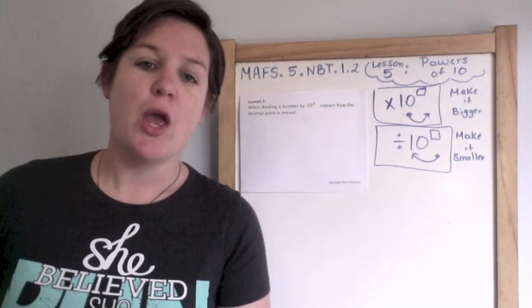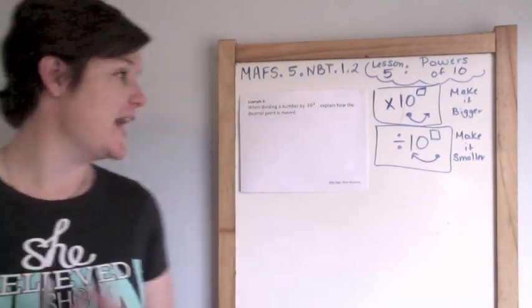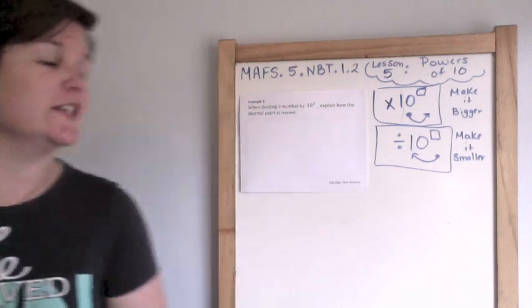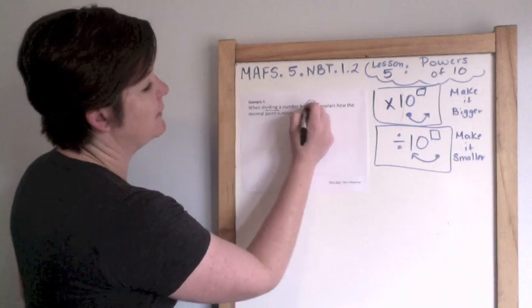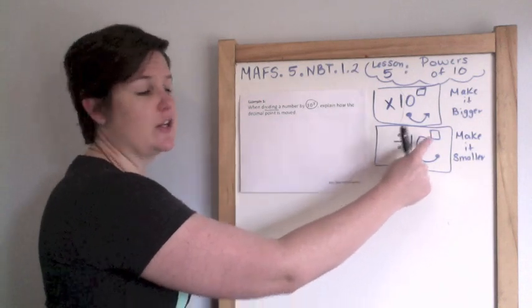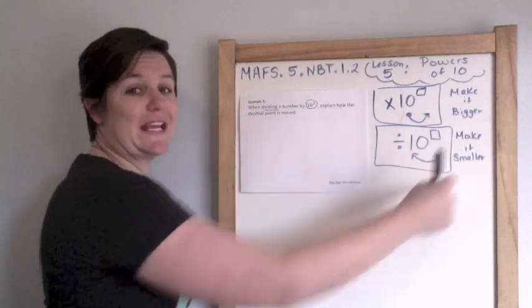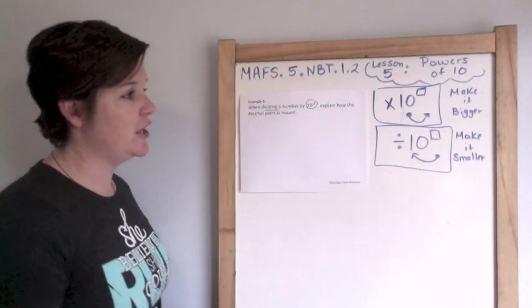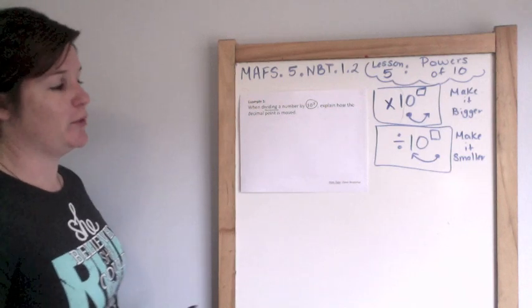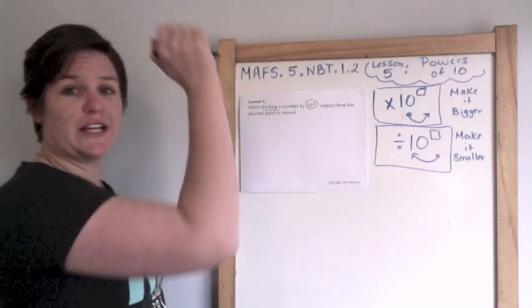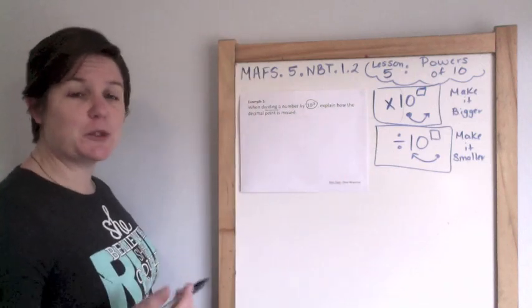Last one, example five. When dividing a number by 10 to the third power, explain how the decimal point is moved. Dividing a number by 10 to the third power, we are making it smaller, going to the left. So explain how the decimal point is moved. The decimal point is moved uno, dos, tres, three places to the left.